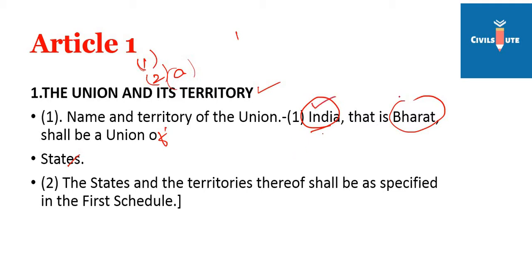If you look at India and Bharath — these two names appear in the Constitution. In the constitution assembly, there was a debate about what the name of the country should be. One group preferred the name Bharath, and ultimately the Constitution uses both: India, that is Bharath.